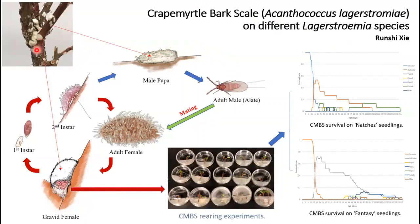The white sacs here on the plant are actually the male pupae and the gravid females depending on their size and shape.